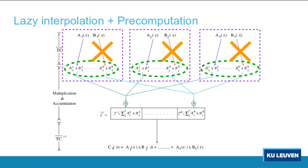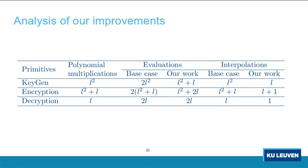Both lazy interpolation and precomputation can be combined. As you can see, the evaluation of one operand does not always need to be computed. The result is accumulated in the point-value domain after running evaluation and point-value multiplication for each pair of operands, and only one interpolation per row-column product is performed to retrieve the final result. These optimizations can be generalized for any security category, defined by the size of the matrix through the parameter L. In this table, we show the improvement in the number of operations for the key generation, encapsulation, and decapsulation of Saber for any value of the parameter L. As you can see, the greatest improvement is due to the lazy interpolation.